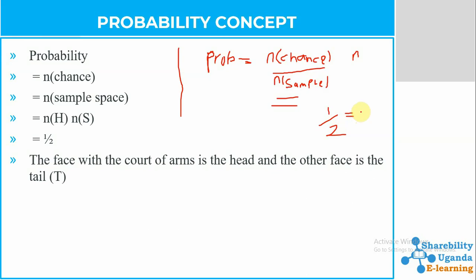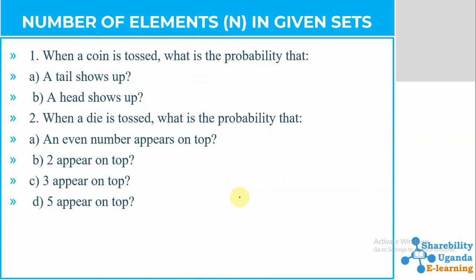So the probability is always a half — or we can write it as 0.5, or as 50 percent. These are the equivalent terms we use when dealing with probability: a half, 0.5, or 50 percent. A coin has two faces — one face is the head and the other face is the tail.